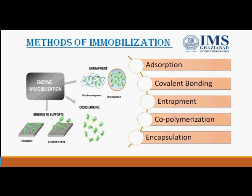Methods of immobilization can be categorized into three main heads: binding to the support, cross-linking, and entrapment. Binding to the support involves the physical interaction between the substrate and the enzyme molecule, and can be further divided into adsorption and covalent bonding. Entrapment involves capturing the enzyme in the porous matrix of the support; examples include matrix entrapment and encapsulation.